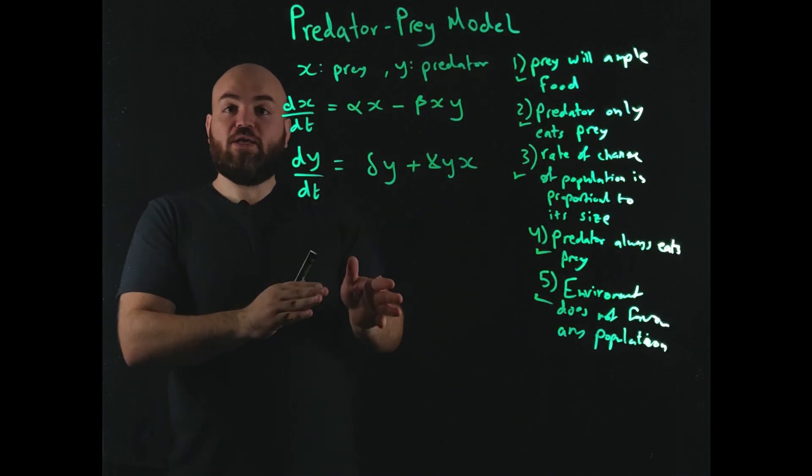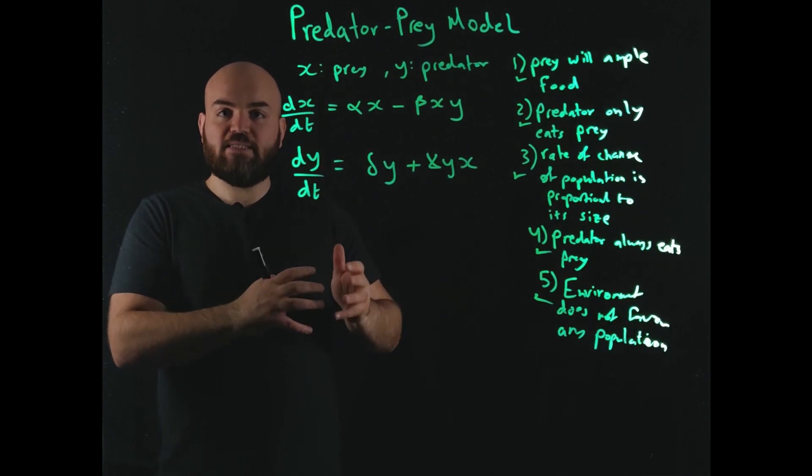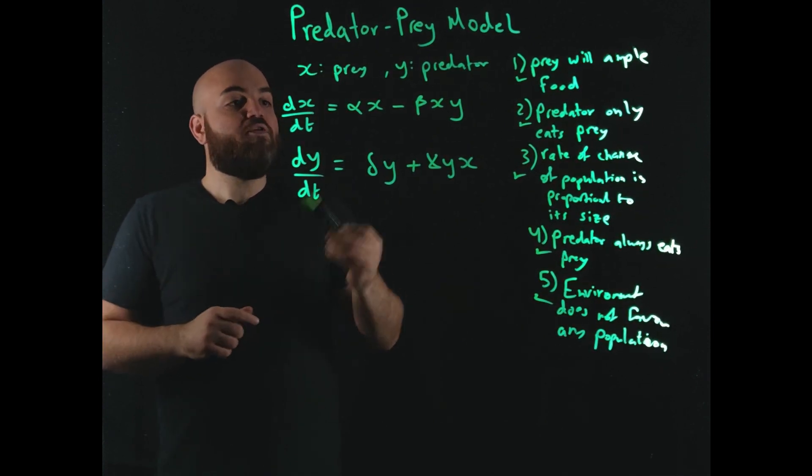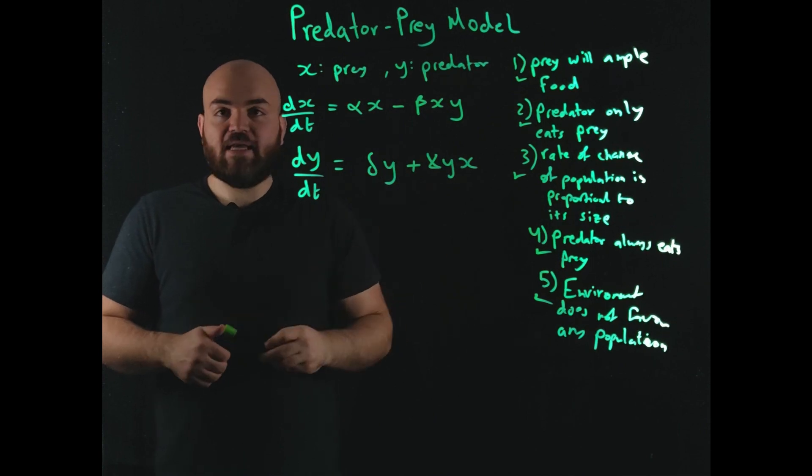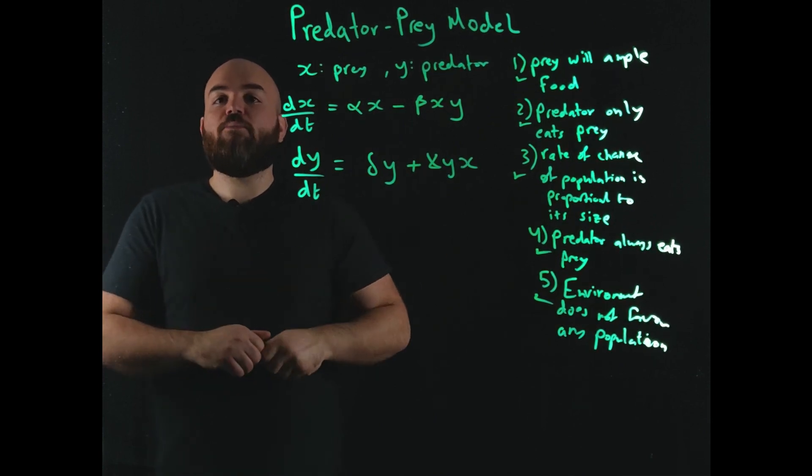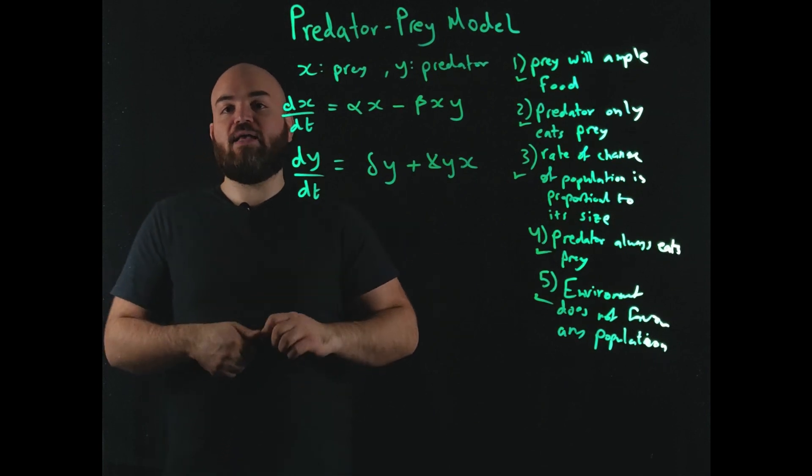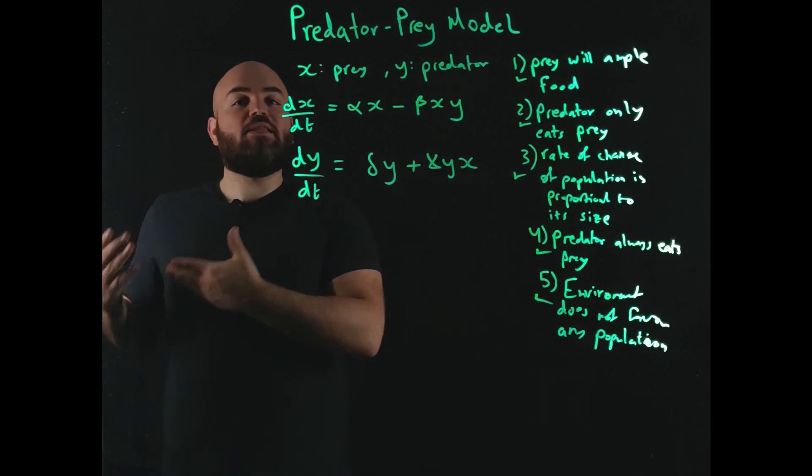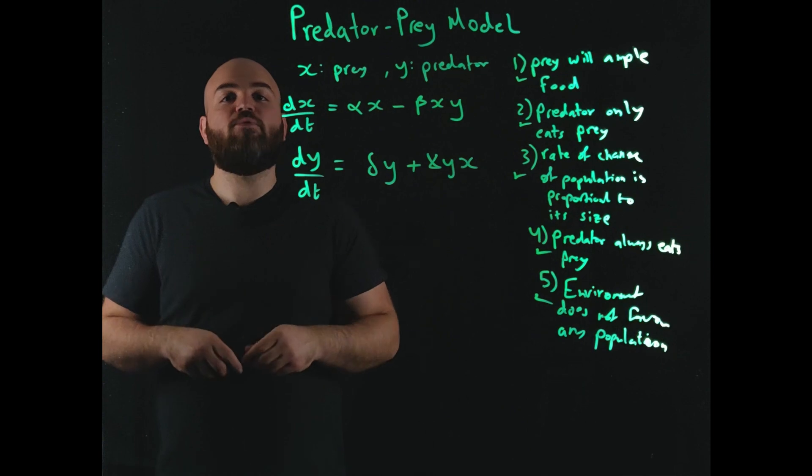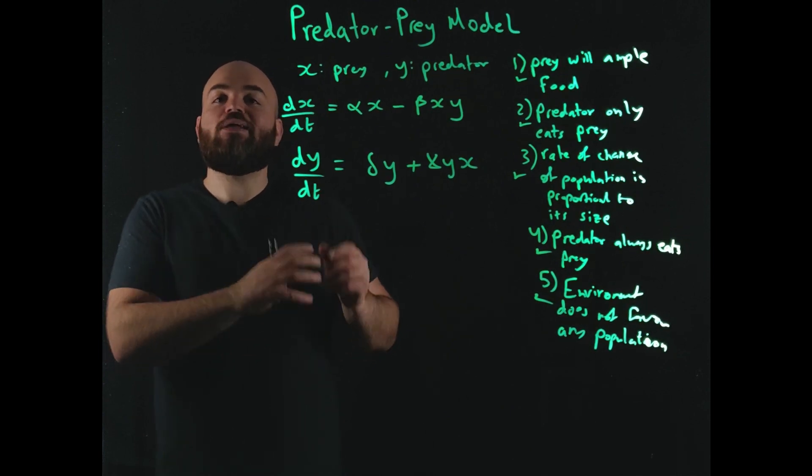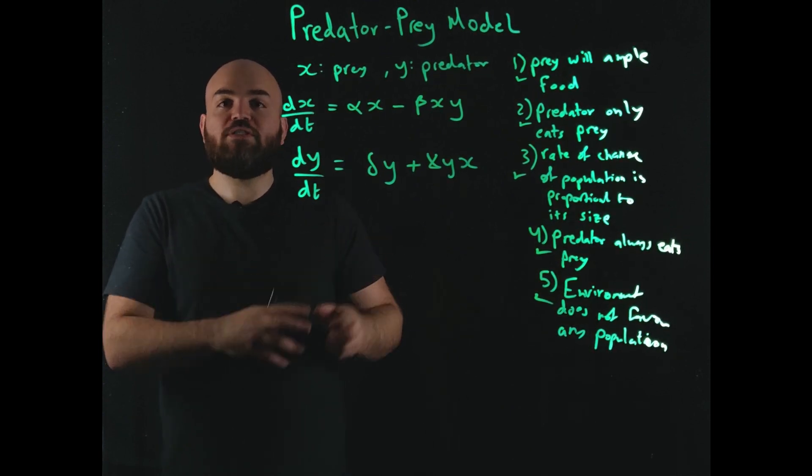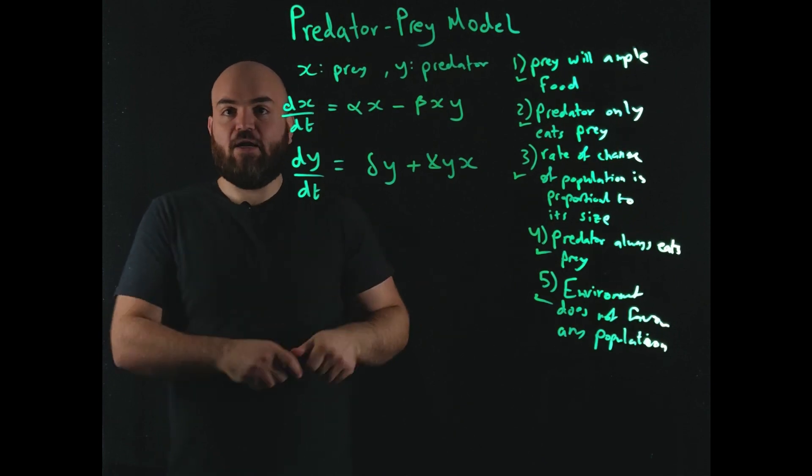So now we have equations that define how the predator-prey system interact with each other. Now these constants, alpha, beta, delta, and gamma, you can get them from an actual study, or you can go, if you actually are studying a system that has these values, it's like when we did the previous videos on, say for example, suspension system. We had the mass, we had the damping, all those coefficients, we could have gotten them from experiments. It's the same thing here.